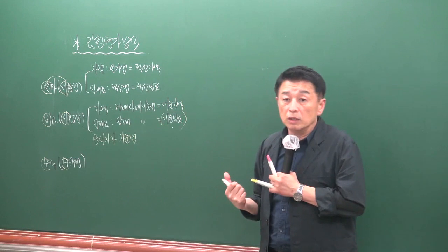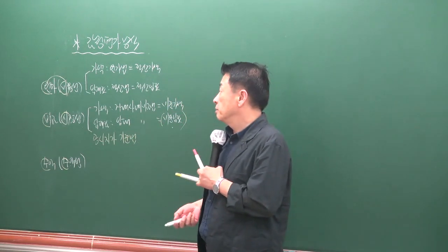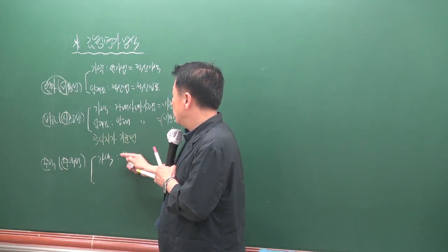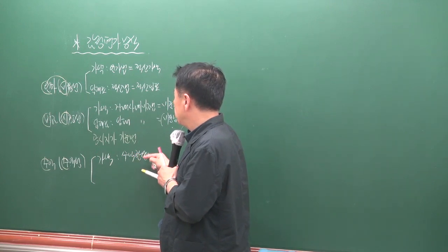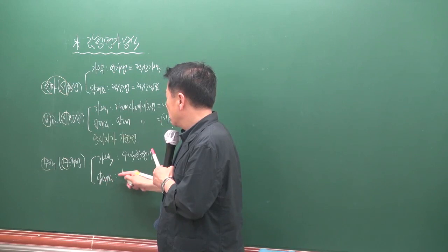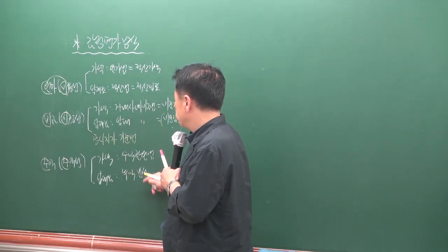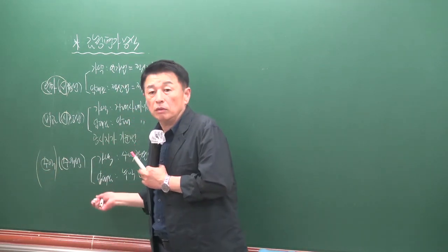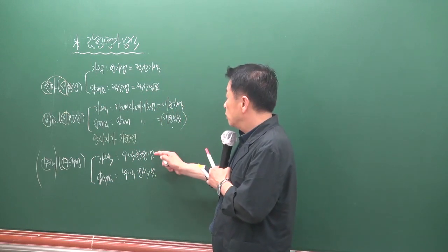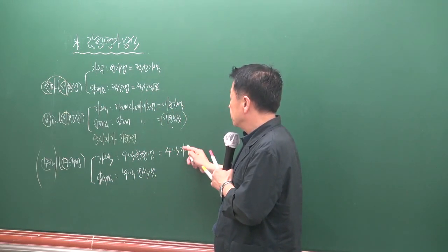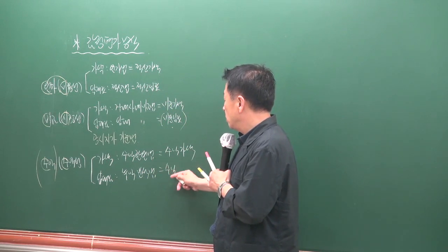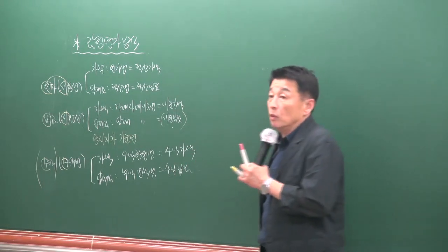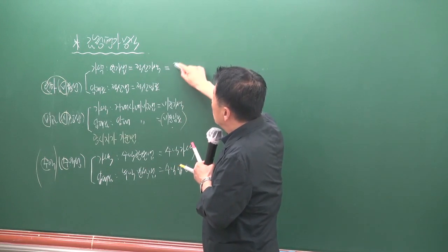비교 방식 안에는 공시가격기준법도 포함됩니다. 수익 방식에서 가액을 구하는 방법은 수익환원법, 임대료를 구하는 방법은 수익분석법으로, 각각 수익가액과 수익임료를 산출합니다. 이것들은 가로 놓기 형태로 출제된 바 있습니다.